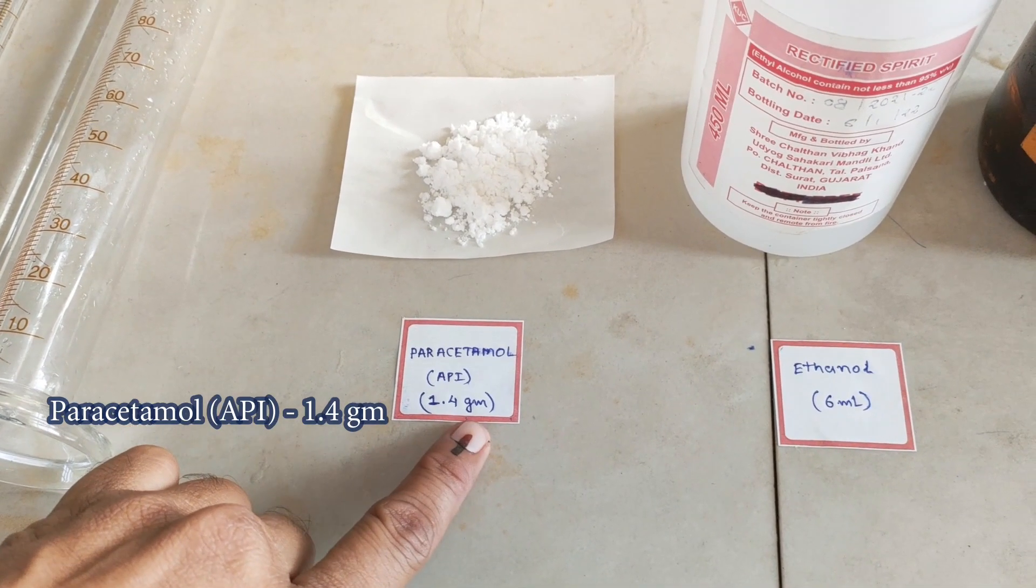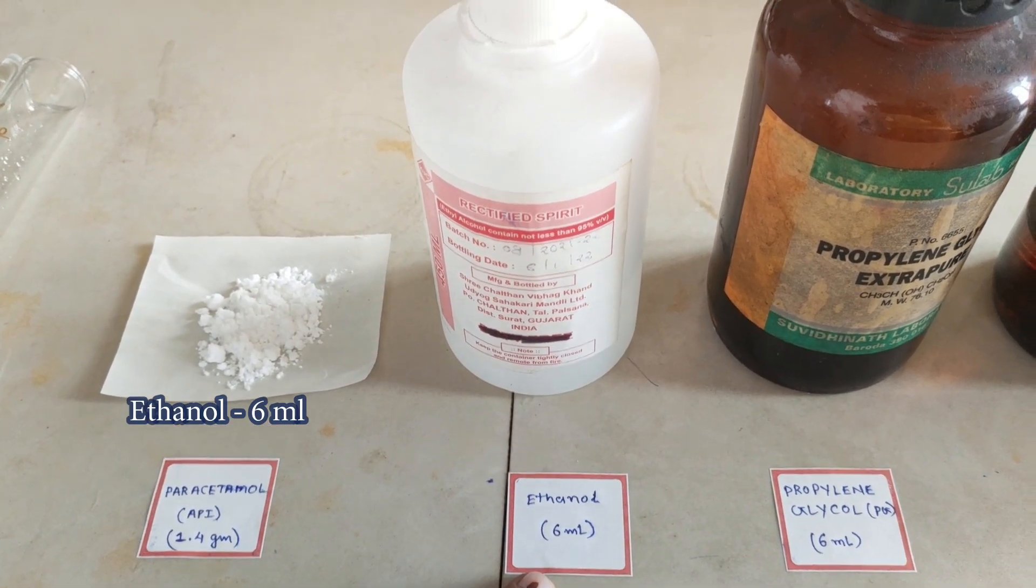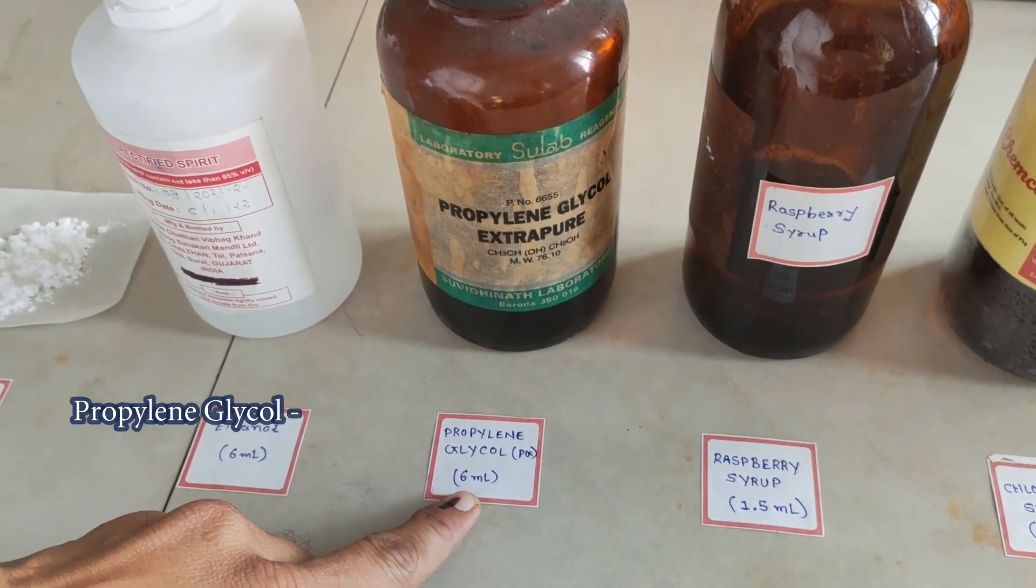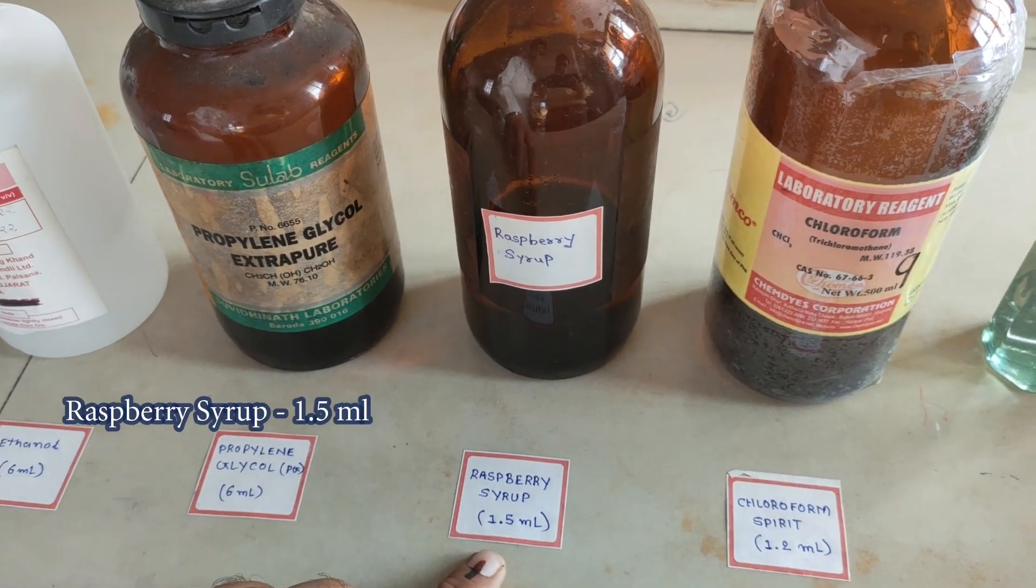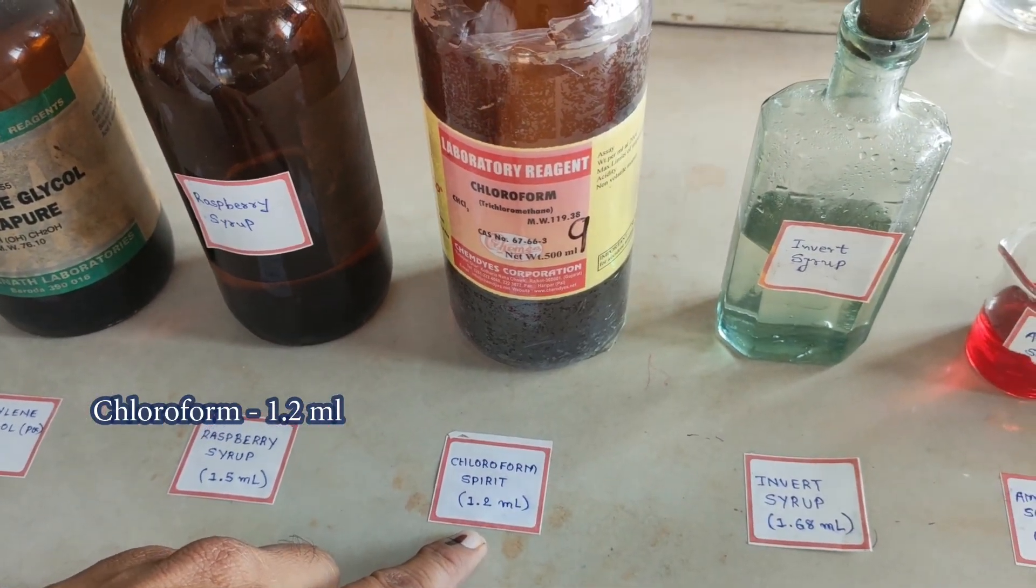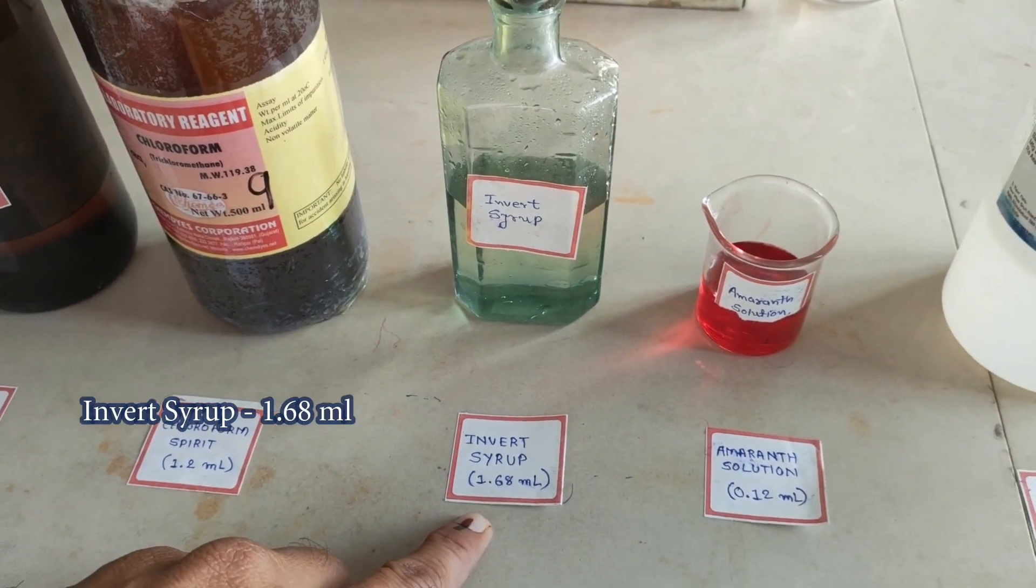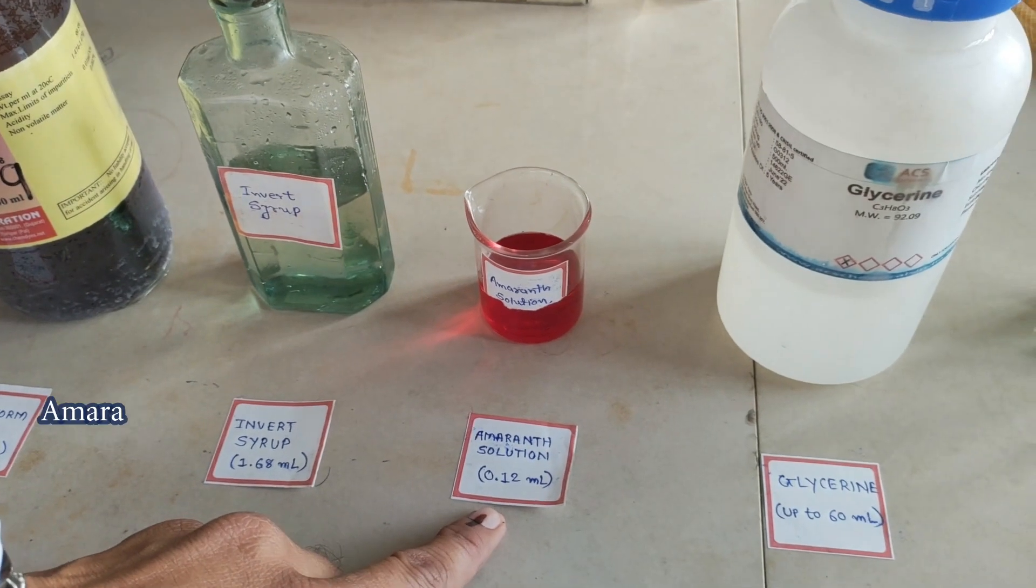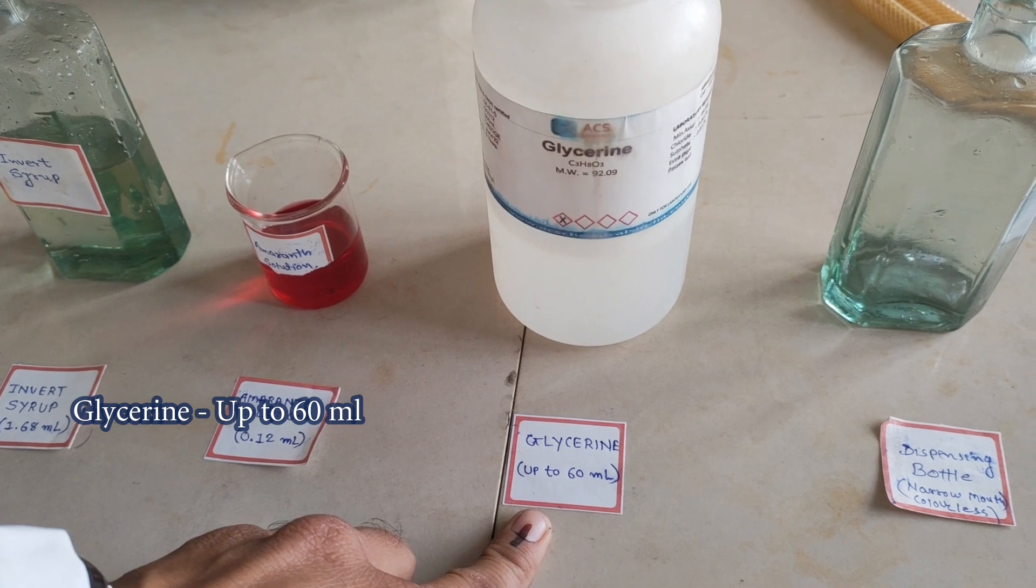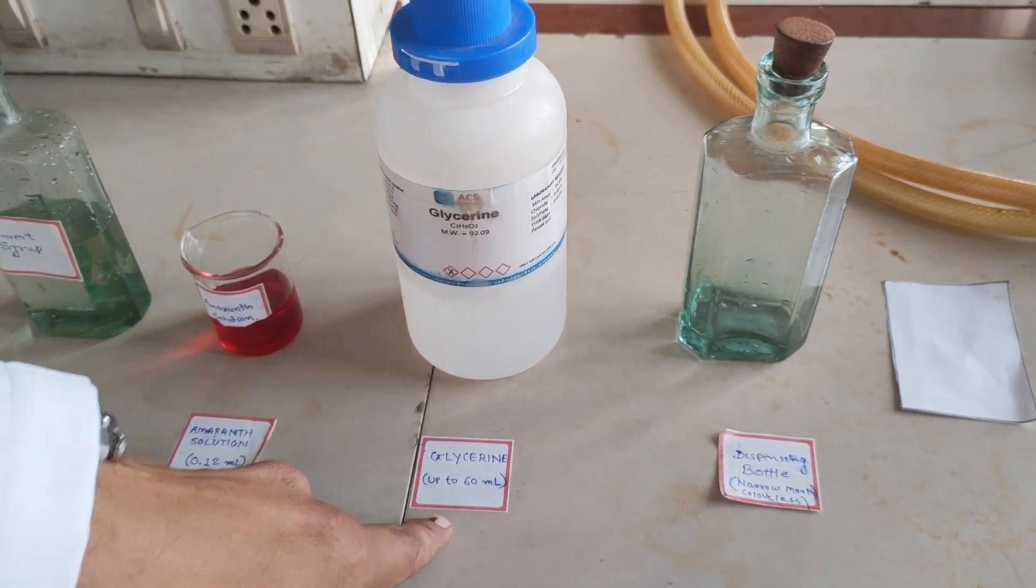We are going to use 1.4 grams paracetamol, 6ml ethanol, 6ml propylene glycol, 1.5ml raspberry syrup, 1.2ml chloroform spirit, 1.68ml invert syrup, 0.12ml amaran solution, and glycerin as vehicle up to 60ml.